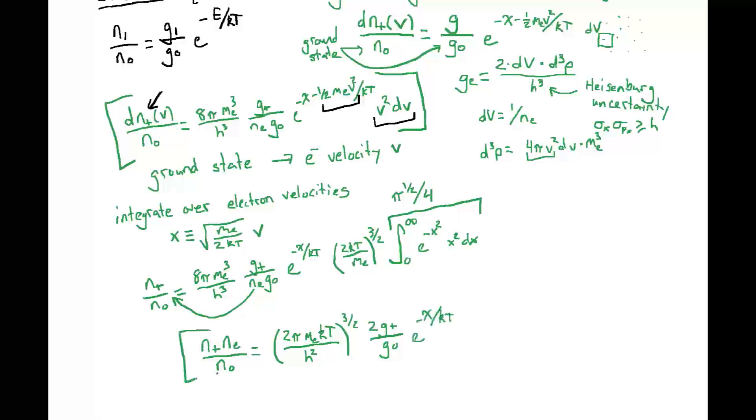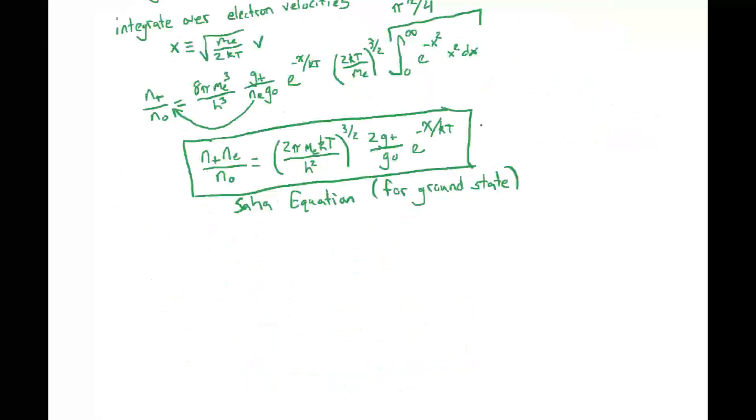Now this equation right here is sometimes called Saha's equation, but we should remember we're still in green here. This is just for the ground state. If we want to generalize from the ground state to an atom or ion that's in any excitation state, then we need to translate the number density of neutral atoms in a ground state to the number density of neutral atoms in any state.